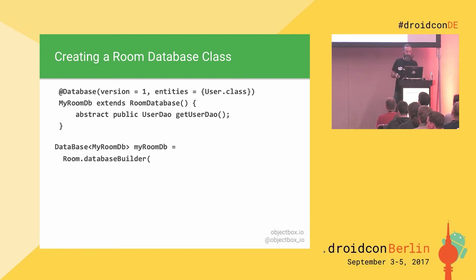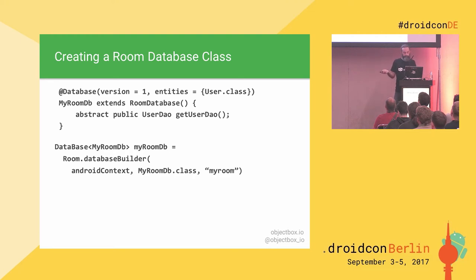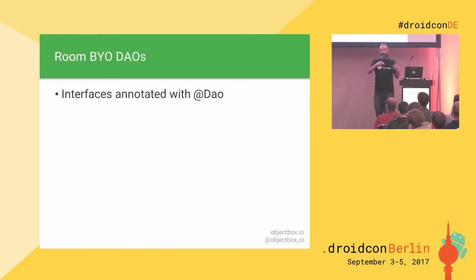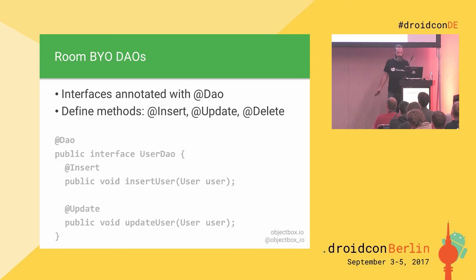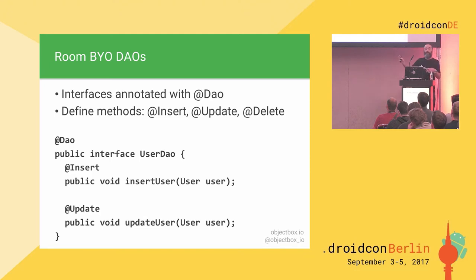This is how you initialize your database. Here you can provide your own methods to get a DAO. To initialize your RoomDB, you go through Room.DatabaseBuilder and provide an Android context, the class, and a name for your database file. You can also add migrations, then build it and you have your database. Those database classes give you access to individual DAOs. DAOs are interfaces — you just use the @DAO annotation. For inserting, updating, or deleting an object, there are annotations. In the end, this is what you write and Room will give you the implementation.